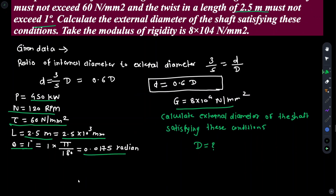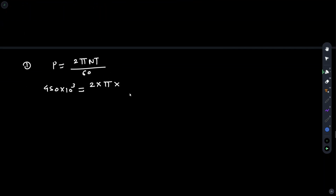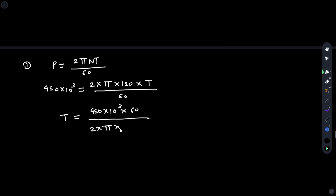To find the torque, use P = 2πNT/60. So 450×10³ = 2π × 120 × T / 60. Solving: T = (450×10³ × 60) / (2π × 120), giving torque T = 35.8×10⁶ N·mm.